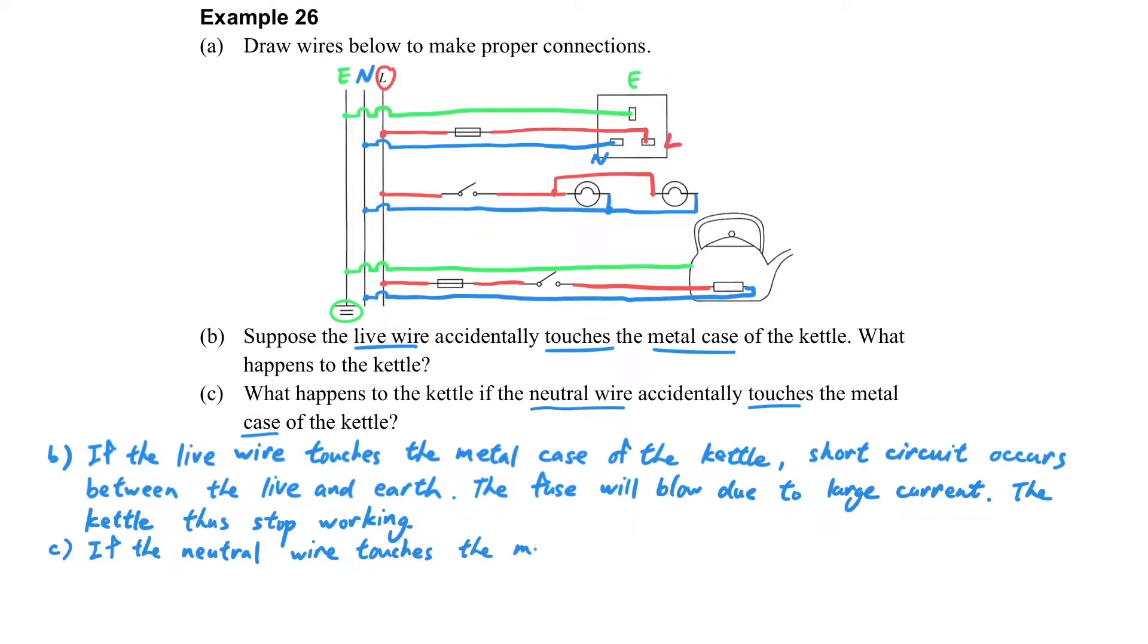If the neutral wire touches the metal case, what does it mean? It means its potential will be the same as the earth wire, which is zero. But do you still remember, the neutral wire originally is also at zero potential? So even if it touches the case and is connected with the earth wire, the current can still flow through it. That means the kettle can still work.